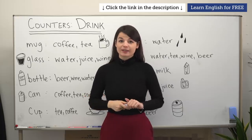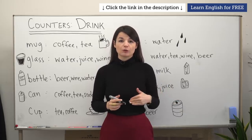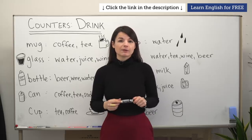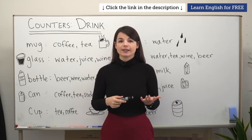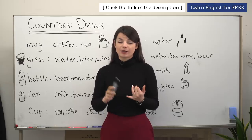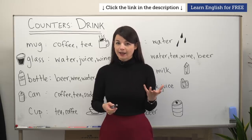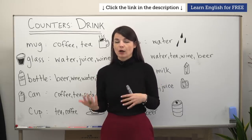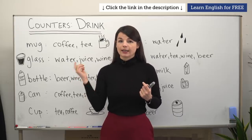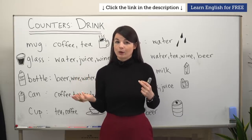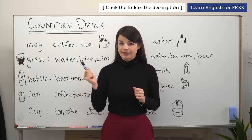Hi everybody, my name is Alisha. Today I'm going to talk about some counter words that we can use for explaining drinks. So if you've seen some of the other videos we've done in this whiteboard series, you may have seen some information about countable and uncountable nouns. Uncountable nouns are nouns that we cannot count with simply one, two, or three in front of the noun. Instead, we have to use what are called counter words to explain the quantity. These are some words that we can use to talk about drinks specifically.